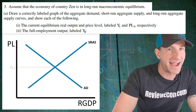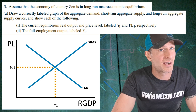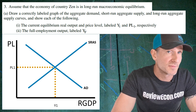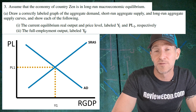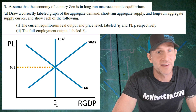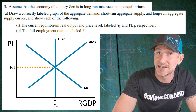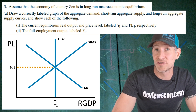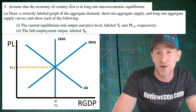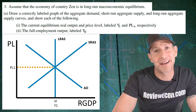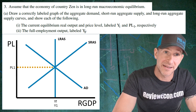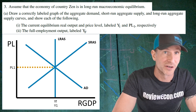We start by labeling our axes: real GDP on the x-axis and the price level on the y-axis. We draw a downward-sloping aggregate demand curve, an upward-sloping short-run aggregate supply curve, and mark the current equilibrium at Y1 and PL1. Next we add the long-run aggregate supply curve. Since the country is in long-run equilibrium, YF — labeled below the LRAS — equals the current equilibrium output Y1. That graph earns two points: one for the basic diagram and one for the LRAS and YF.